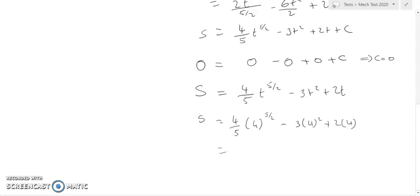4 to the power 5/2, that's 32. 32 times 4 over 5, what's that going to be?